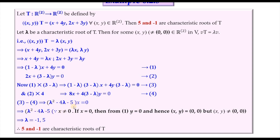Since x cannot be zero — if x were zero then from equation 1, y would also be zero, contradicting that (x, y) is a non-zero vector — we must solve lambda squared minus 4 lambda minus 5 equals zero. Solving this gives lambda equals minus 1 and lambda equals 5. So 5 and minus 1 are the characteristic roots of T.